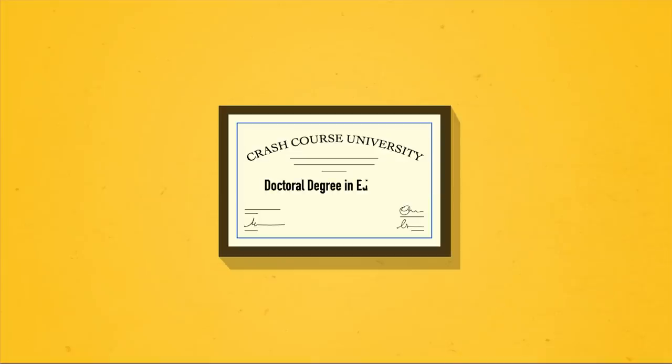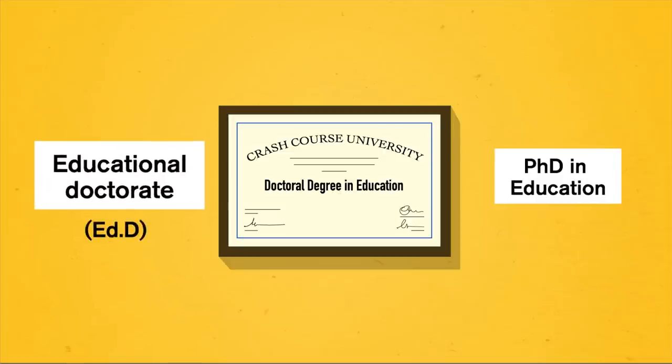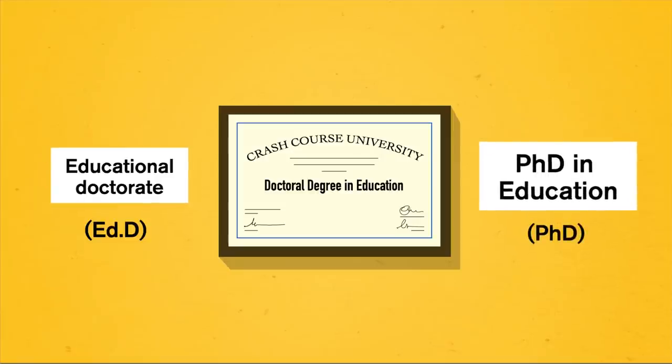These come in two varieties depending on the type of work that you want to do, an educational doctorate and a PhD in education. Educational doctorates are best if you want to become an administrator or top executive at the K-12 or college level. And a PhD is best if you want to pursue a career in academia either teaching or doing research at the university level.